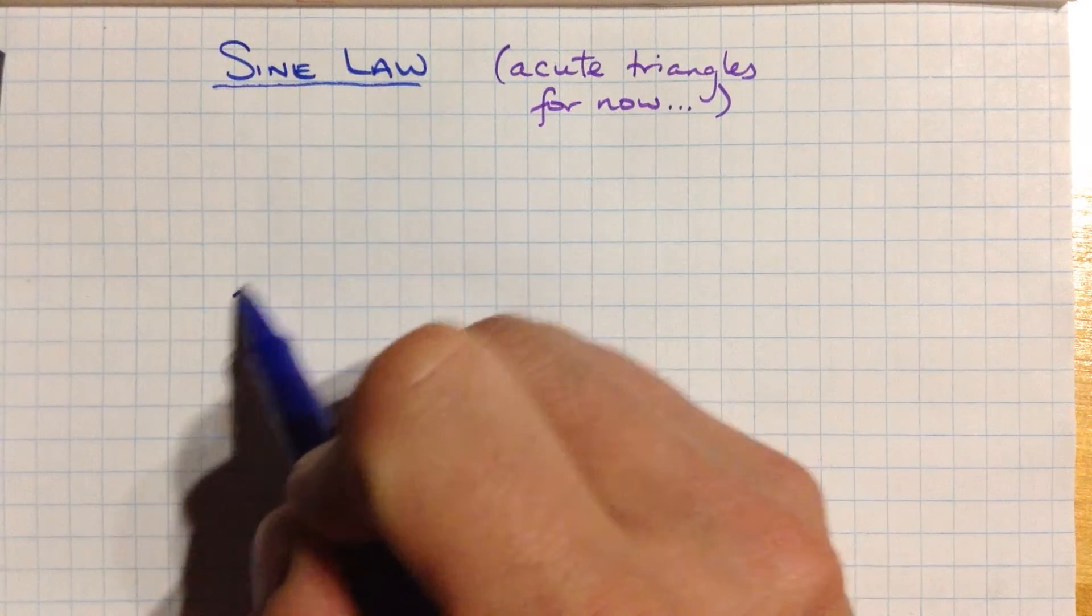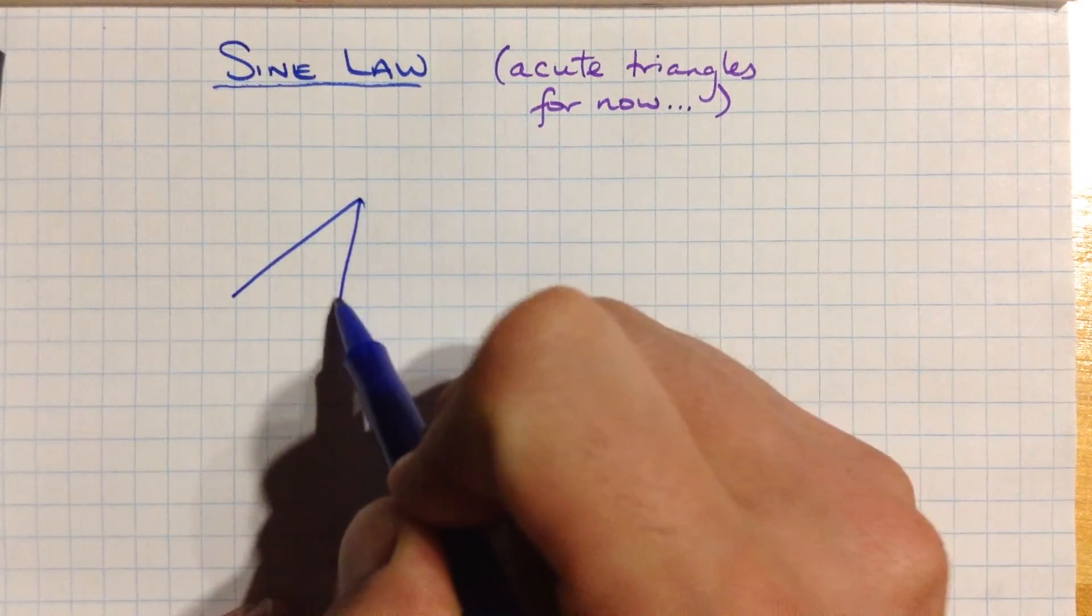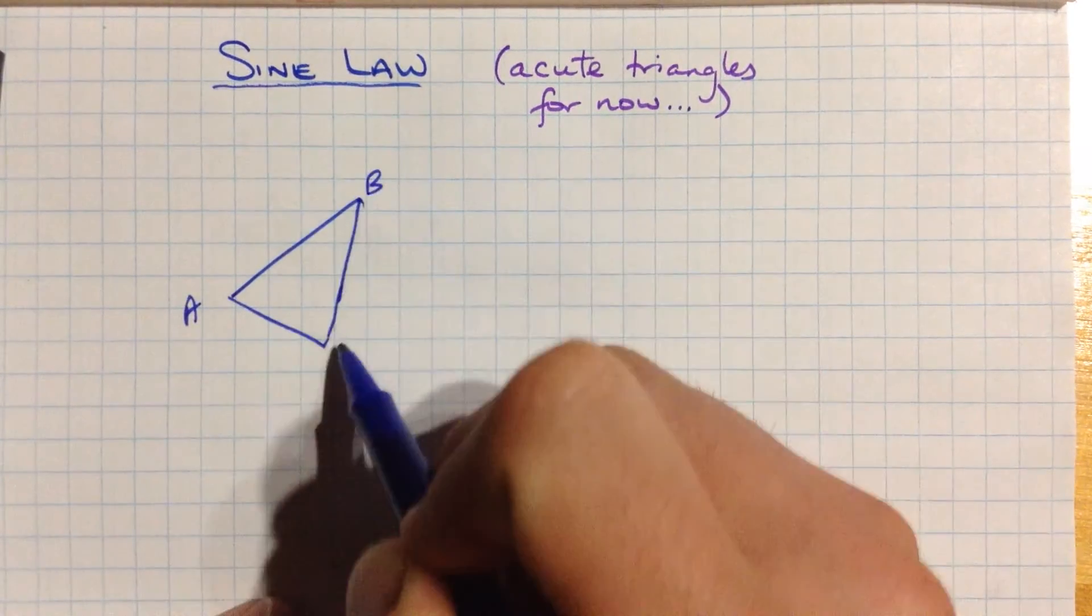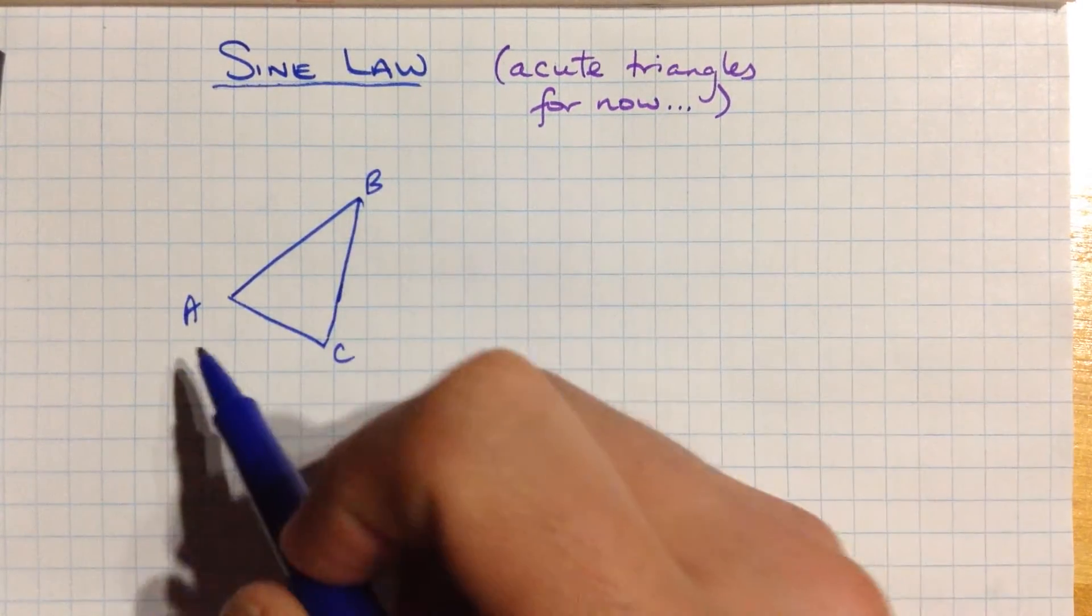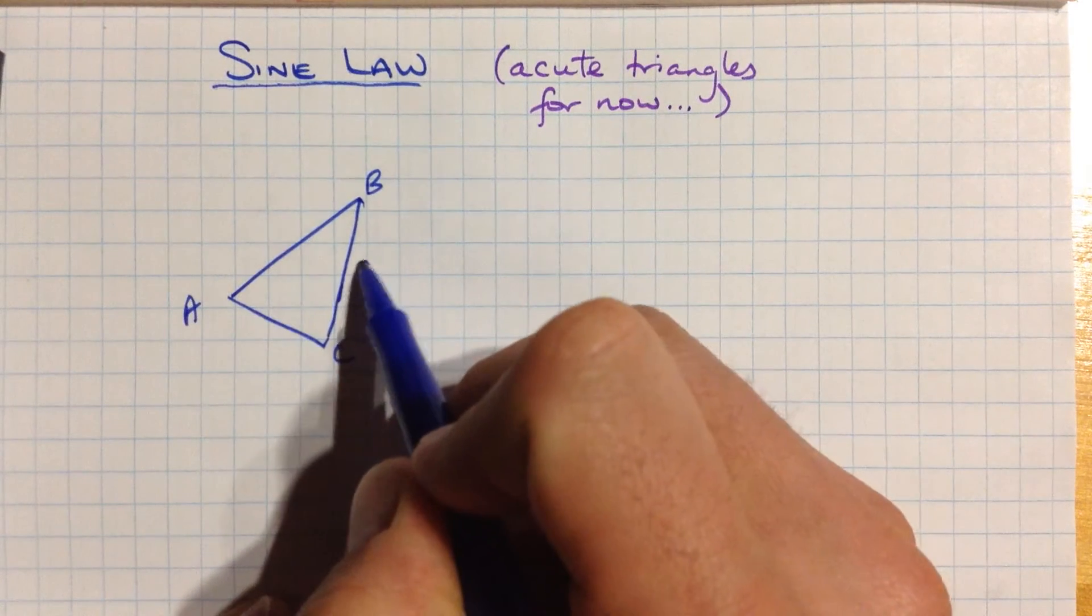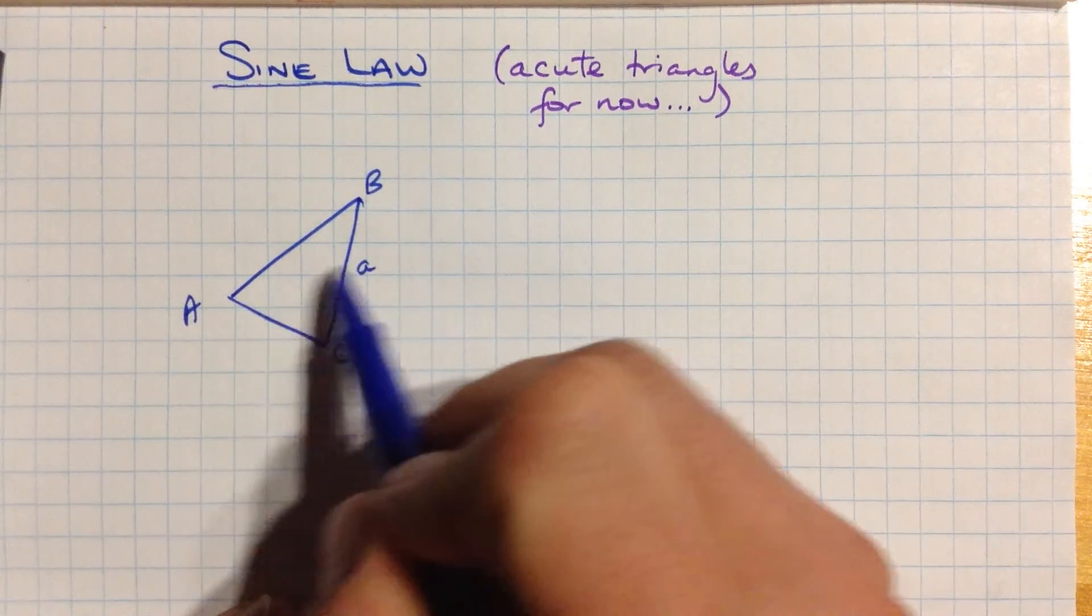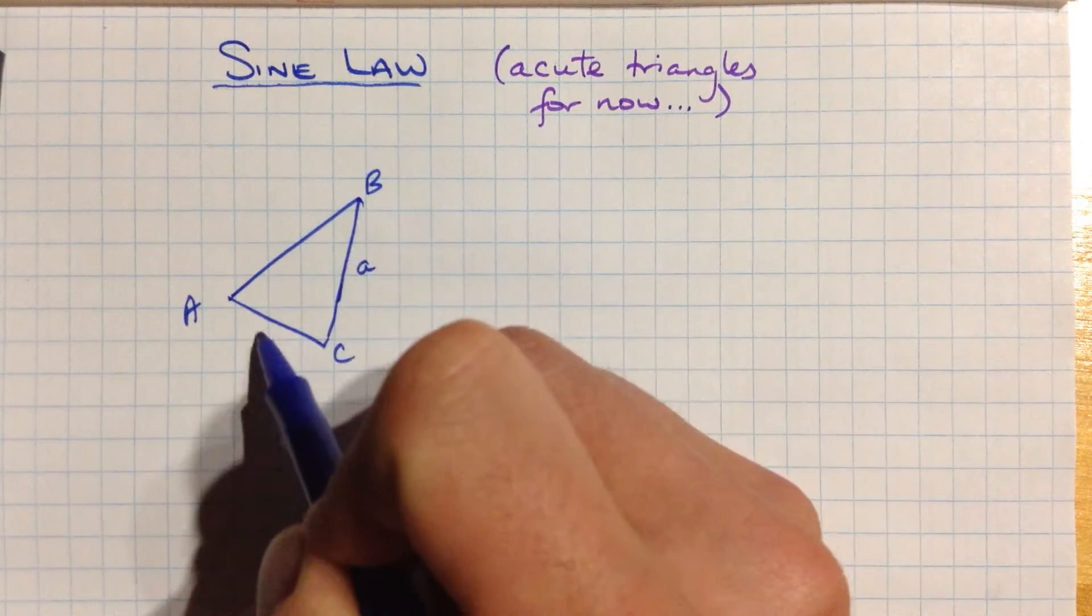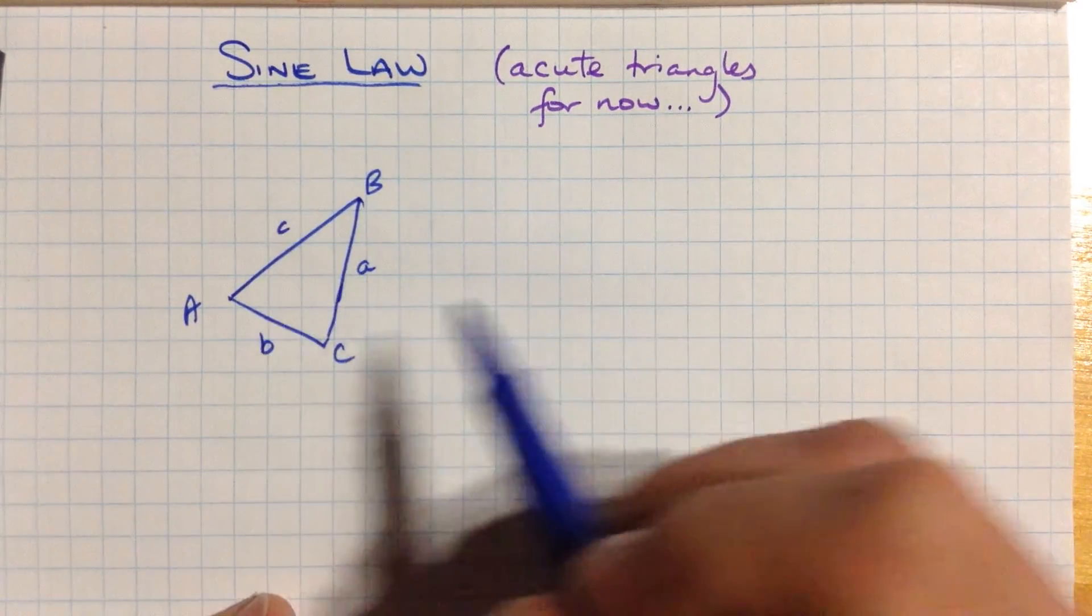The way the sine law works is this. If you have a triangle like this one, and we label it ABC, and remember we often label this with opposite sides using the same letters. So there's vertex A and side little a. There's b and little b, c and little c.